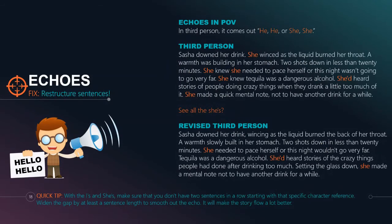Let's look at it in third person, because in third person we end up running into the he/he/he or she/she/she echo. Example: 'Sasha downed her drink. She winced as the liquid burned her throat. A warmth was building in her stomach. Two shots down in less than 20 minutes. She knew she needed to pace herself, or this night wasn't going to go very far. She knew tequila was dangerous. She'd heard stories of people doing crazy things when they drank a little too much of it. She made a quick mental note not to have another drink for a while.' We have six she's in that small paragraph.